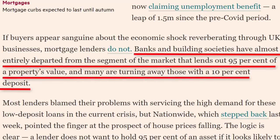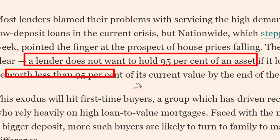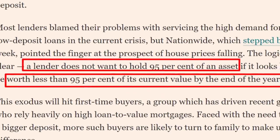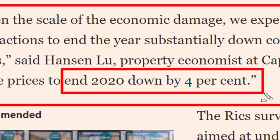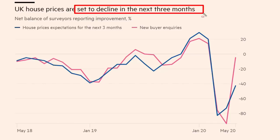Banks and building societies have almost entirely departed from the segment of the market that lends out 95% of the property's value, and many are turning away those with a ten percent deposit. A lender does not want to hold 95% of an asset if it looks likely to be worth less than 95% of its current value by the end of the year. Lenders are seeing the same data — a likely recession with mass layoffs, unemployment, and bankruptcies. This article suggests house prices could drop around four percent, with a potential 16% drop in the index.